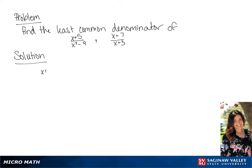We are going to find the least common denominator between these two fractions. The first thing we're going to do is factor the denominator of the first fraction. So we get x plus 5 over x plus 3 times x minus 3.